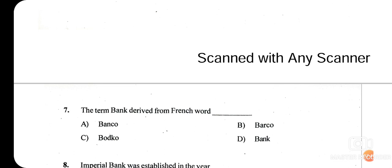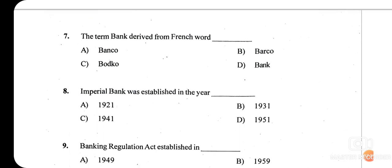Question seven: the term 'bank' is derived from which French word? The actual French word is 'banque' (B-A-N-Q-U-E), but among the options given, 'banco' is the closest match, so we go with option A — banco. The right French word for bank is 'banque.'